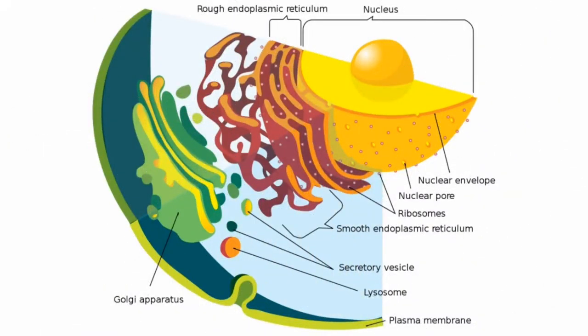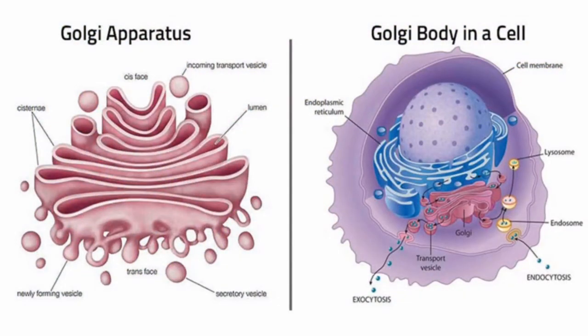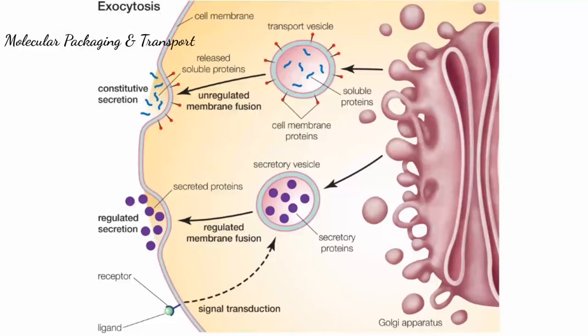There is another organelle very similar to the endoplasmic reticulum, with a similar shape and function, known as the Golgi apparatus. It packages molecules and proteins to be used outside of the cell. One difference between the Golgi apparatus and the ER is that the Golgi bodies are not attached to the nuclear membrane or ribosomes — the Golgi apparatus is normally free-floating within the cytoplasm. In other videos, we'll go into detail on how a protein might go to a Golgi body and get an envelope around it to be shipped out of the cell.